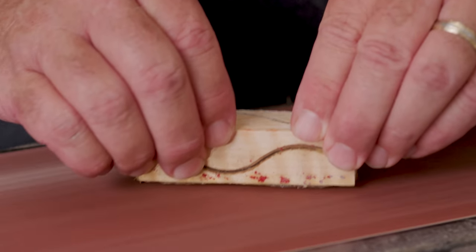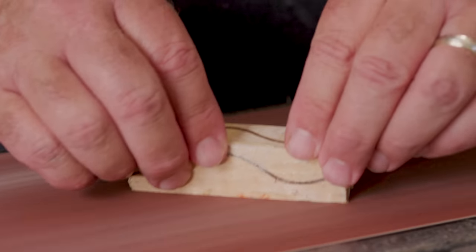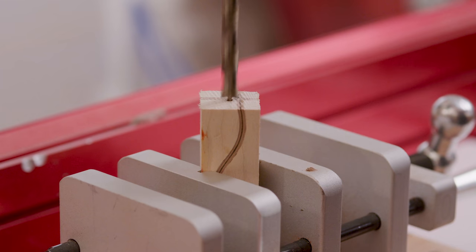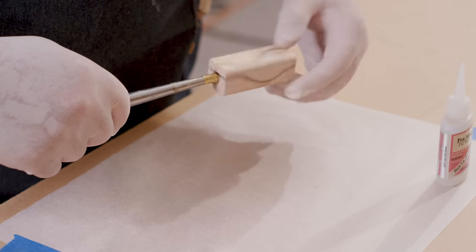Remove the blank from the clamp setup and belt sand the rough laminated surface smooth. Cross cut the laminated blank to length and drill the appropriate size tube holes. Then, glue the brass tube in place.